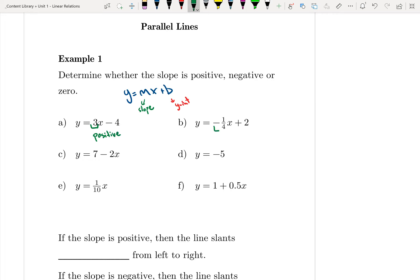In b, the number attached to the x is negative 1 over 4, so that means my slope is negative because that m value is negative.